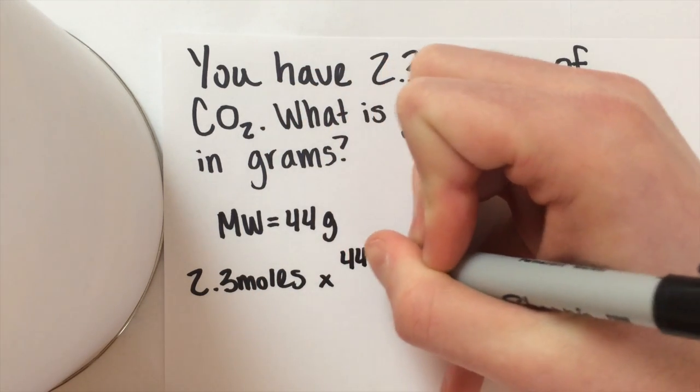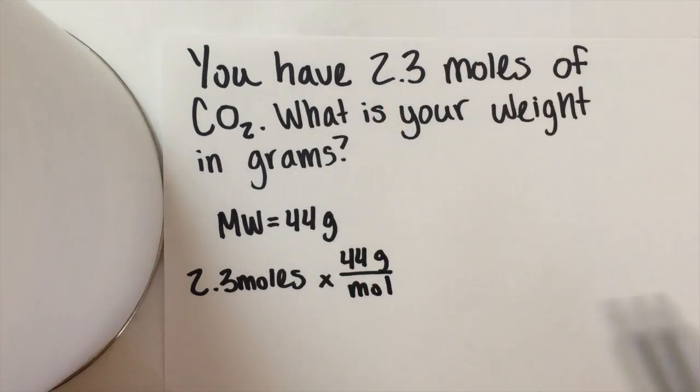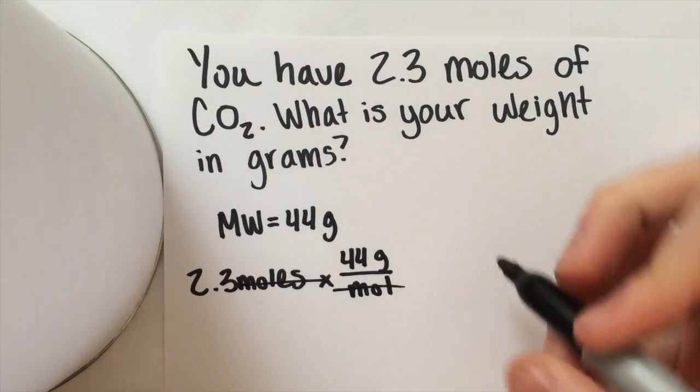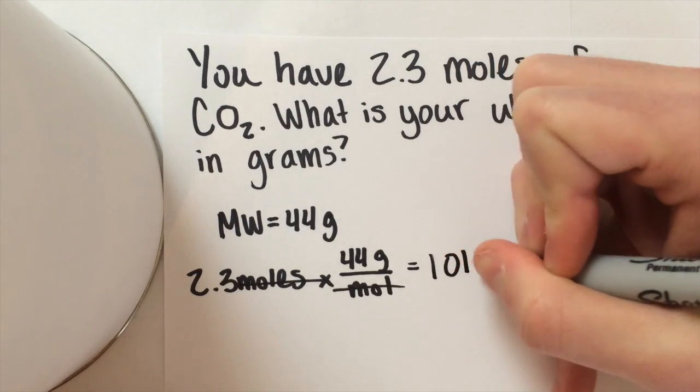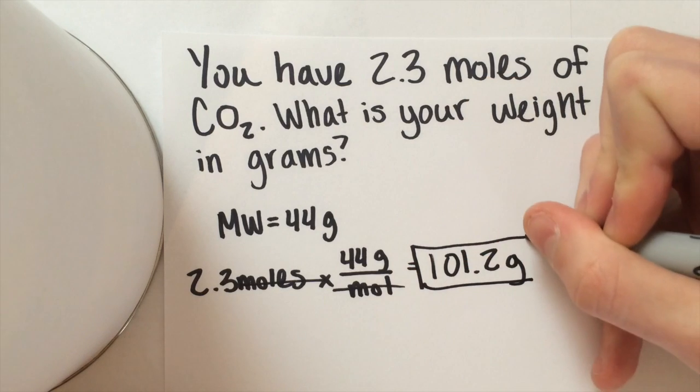Now simply multiply your 2.3 moles by 44 grams per mole. Your moles cancel and you are left with grams. So 2.3 times 44 equals 101.2 grams for your second answer.